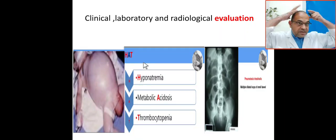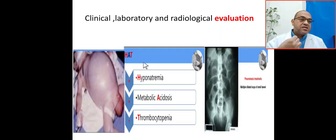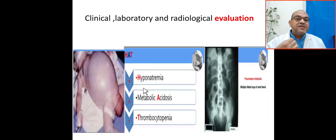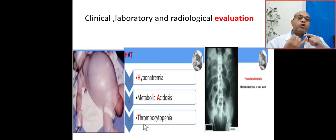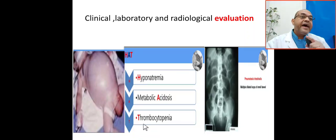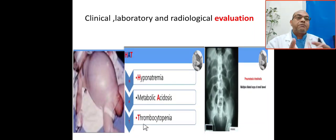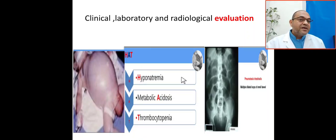For laboratory findings, remember the mnemonic HAT: H stands for hyponatremia, A stands for metabolic acidosis, and T stands for thrombocytopenia. You need to request a general profile or electrolytes, blood gas, and CBC or FBC to look for thrombocytopenia, metabolic acidosis, and hyponatremia.